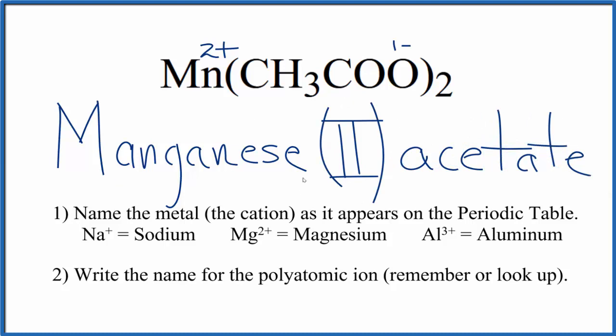If you were given this name, manganese two acetate, and asked to write the formula, the two would tell you that you'd have a two plus on the manganese, so you'd need two of these acetate ions for the charge to add up to zero.